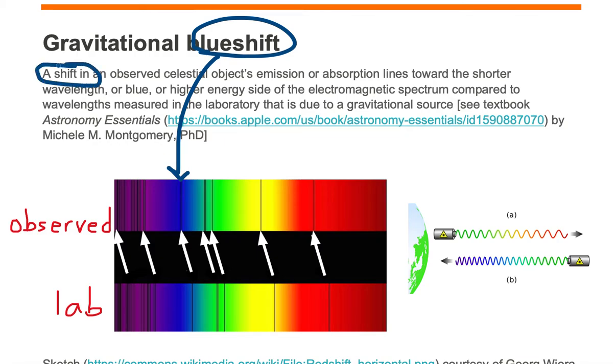It's a shift in an observed celestial object's emission or absorption lines towards the blue side of the spectrum compared to the laboratory.